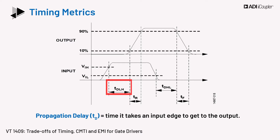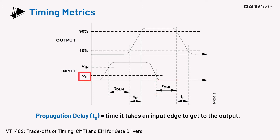It is defined for the rising transition, denoted as TDLH, which indicates time delay for low to high. This spec is usually defined as the time between the input reaching the threshold for high signal, VIH, to the output rising to 10% of its final value. For the falling transition, this is separately shown as TDHL, which denotes time delay for high to low. This spec is usually defined as the time between the input reaching the threshold for low signal, VIL.